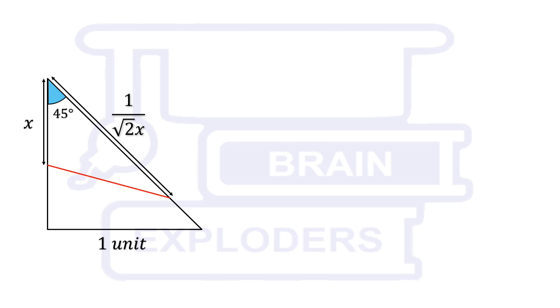Using the second formula, length of cut can be written as under root x squared plus 1 over root 2x squared minus 2x times 1 over root 2x times cos 45 degrees.